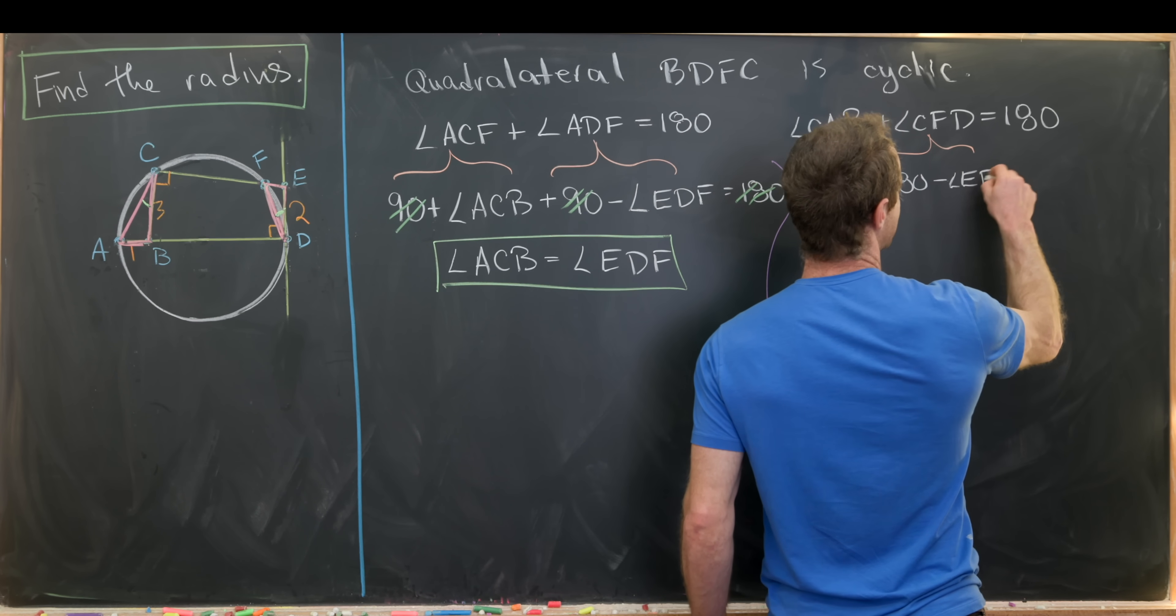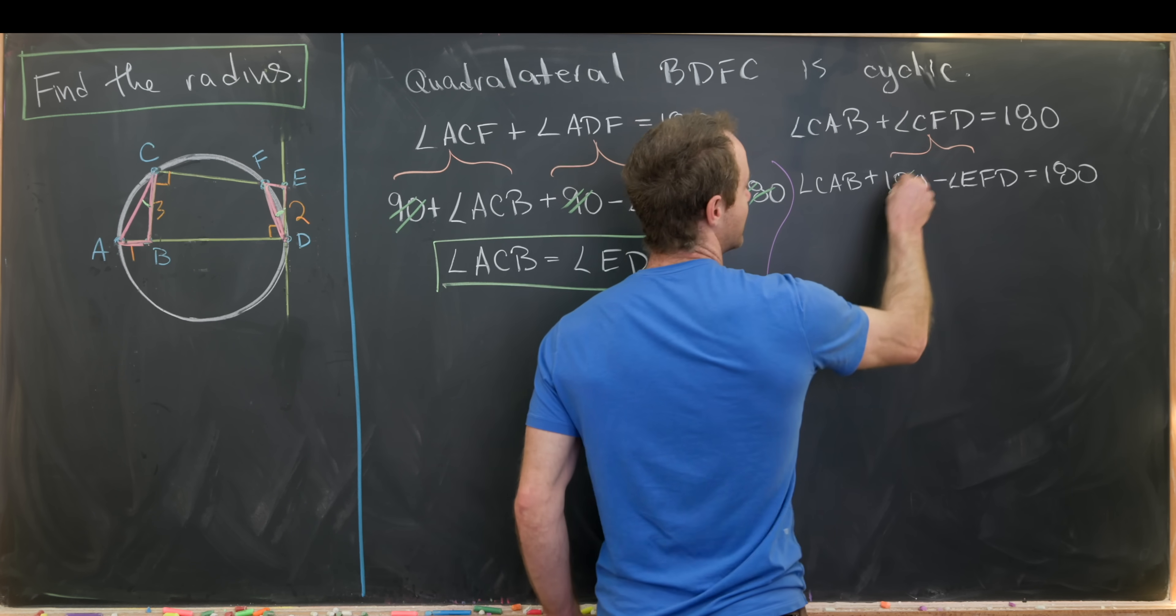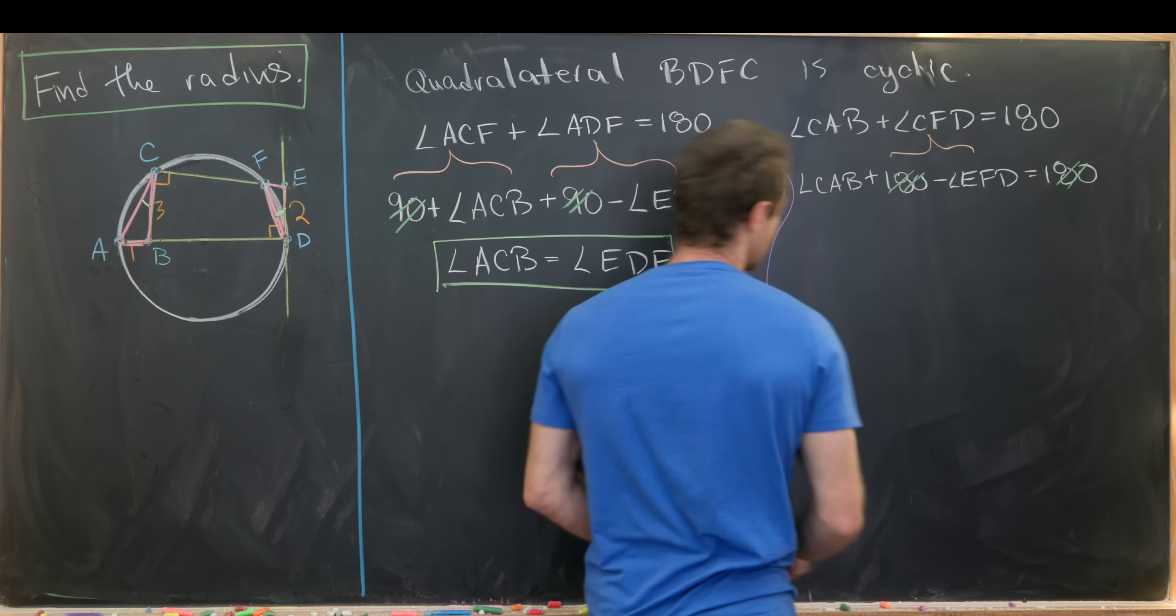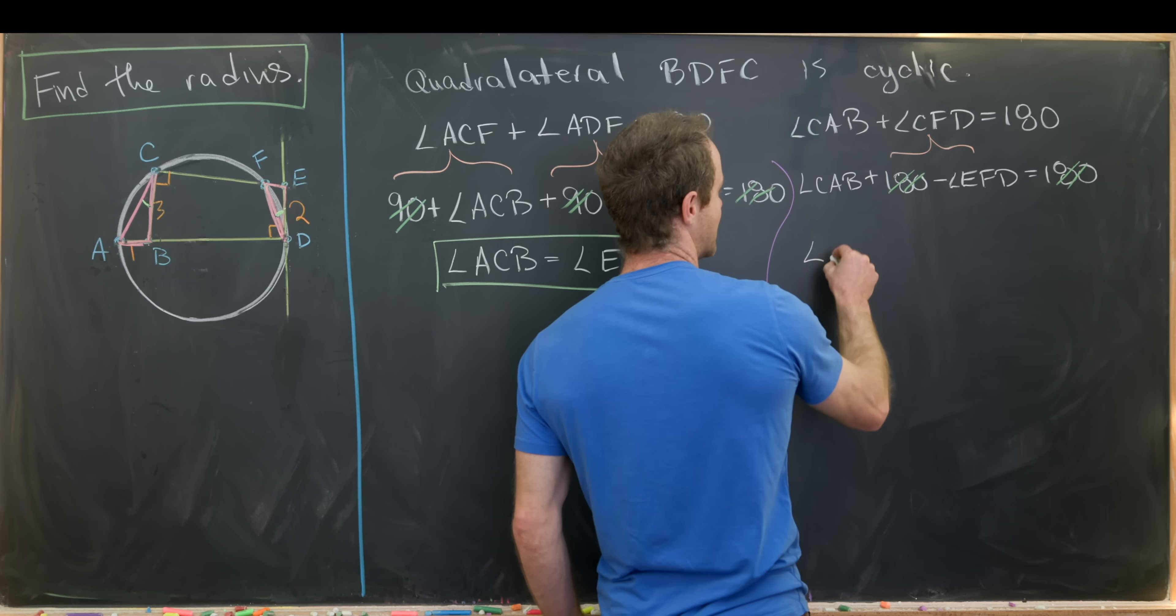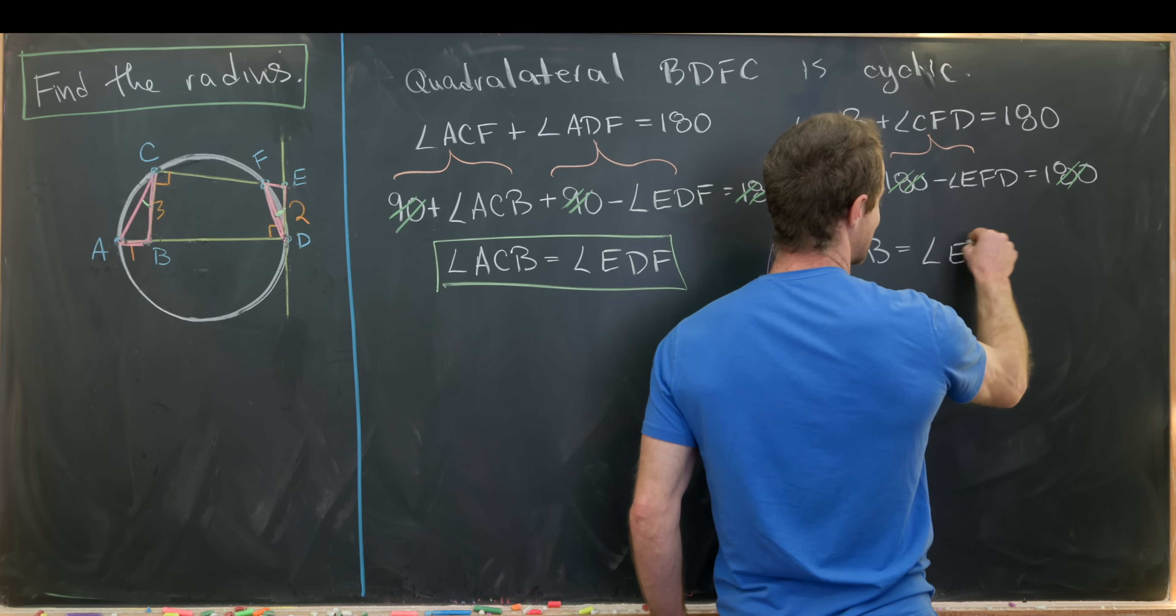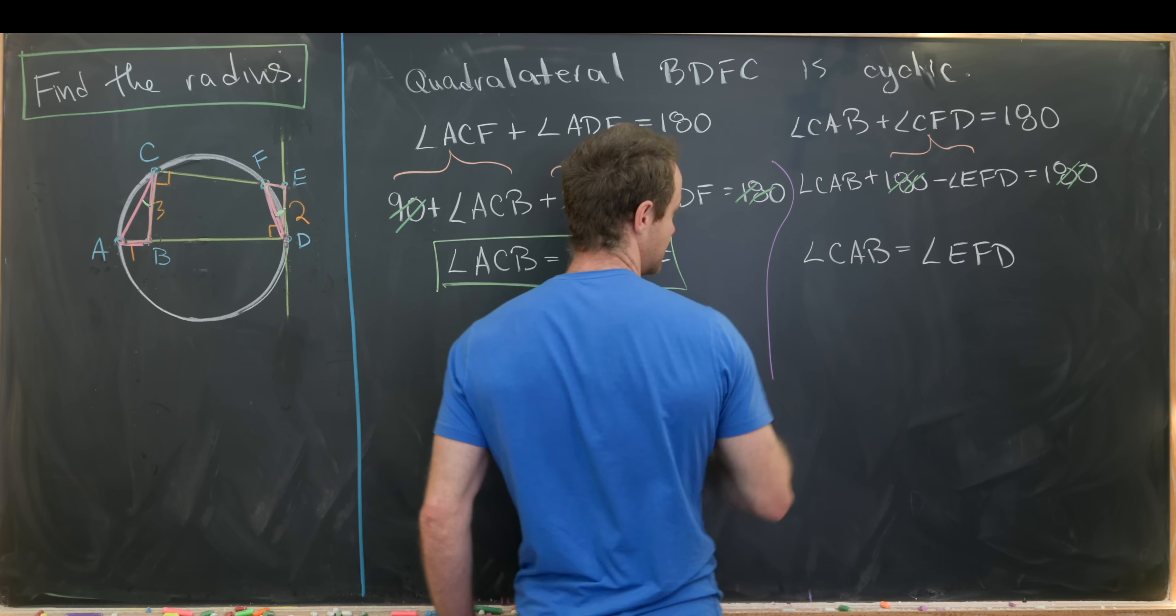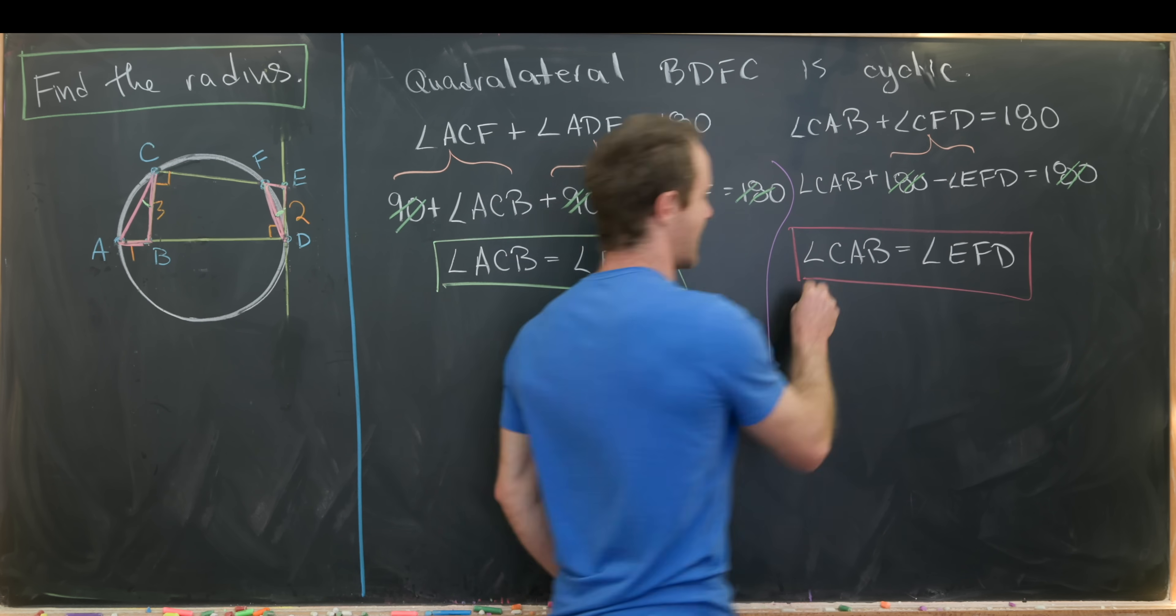But again, the 180s can cancel, and we're left with angle measure CAB is equal to angle measure EFD. So let's maybe box that as well.